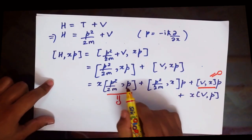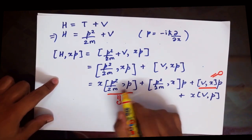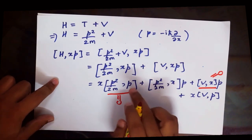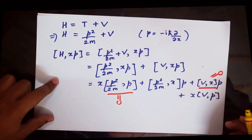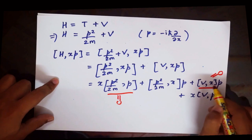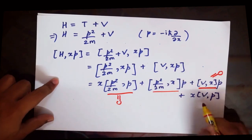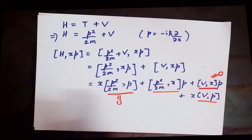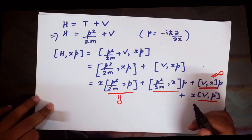Why are some terms zero? First, p commutes with itself — when you expand [p²/2m, p], you get a commutator of p with p, which is zero. Similarly, the potential V commutes with x, so [V, x] equals zero as well. The only non-zero terms are [p²/2m, x] and x[V, p], because we already know the commutator of x with p is ih-bar, so those will never be zero.